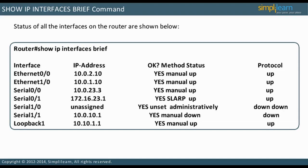Traffic is passing only on the interfaces that are up and up. In this output, all except two interfaces are up and up. Serial 1-0 is administratively down and down, which means that no shutdown command has been configured on this interface. Notice that Serial 1-1 is down and down. This could mean that a cable does not connect it to another device, or that the interface on the device at the other end of the cable has not been enabled.